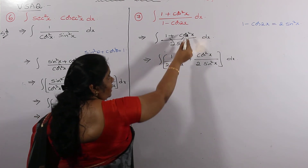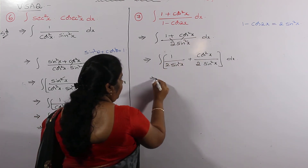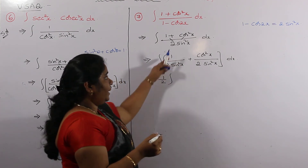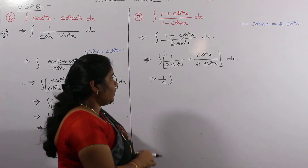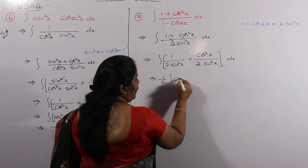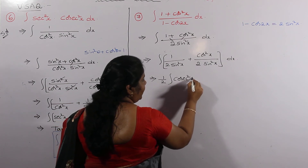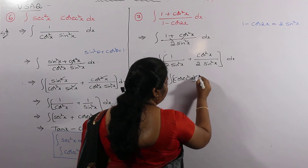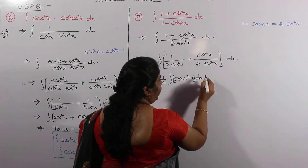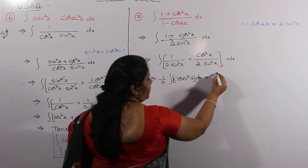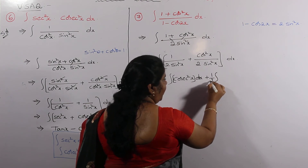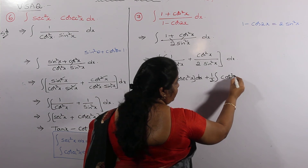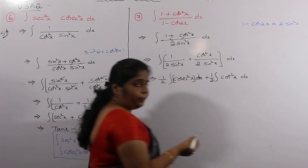Taking constants out: 1 over 2 is a constant, taken outside. We don't have a direct formula for 1 over sin squared x, so 1 over sin squared x is rewritten as cosecant squared x. For the second term, 1 over 2 is also taken out, and cos squared x over sin squared x equals cot squared x. Integrating each function separately.